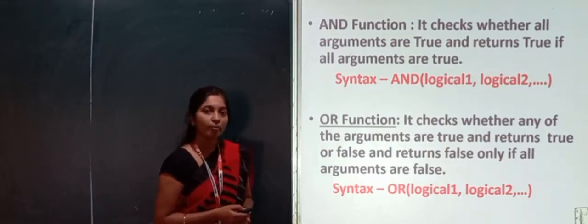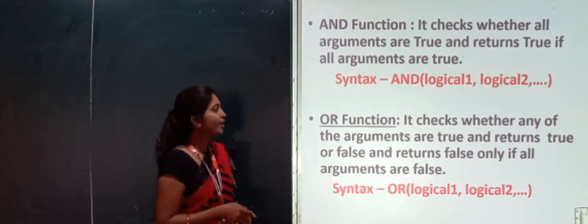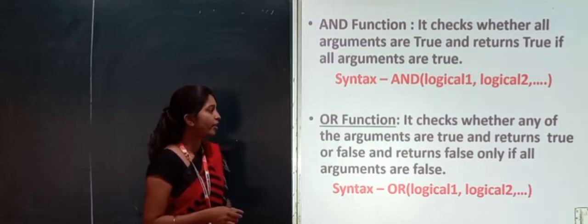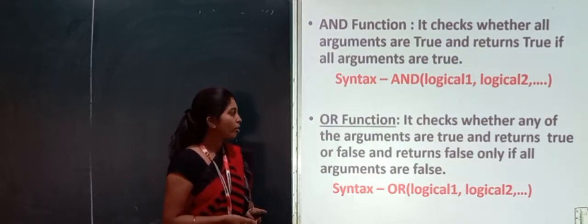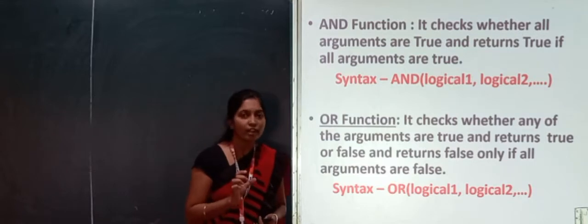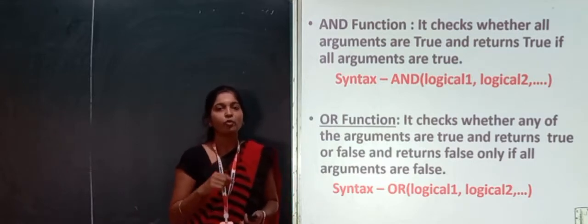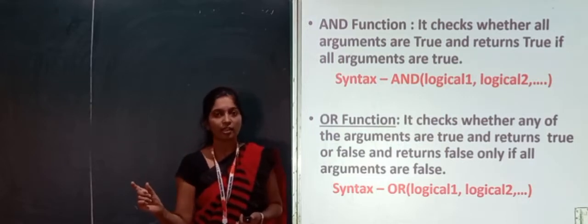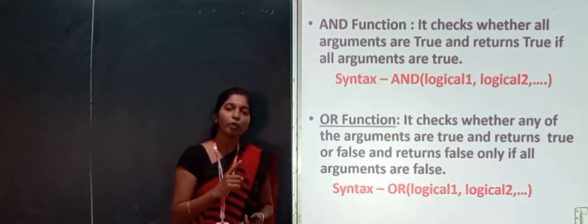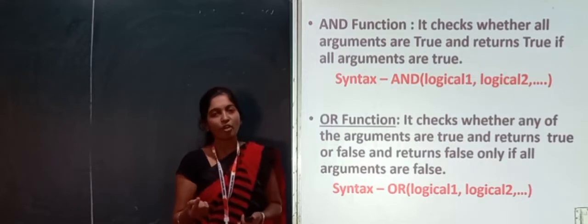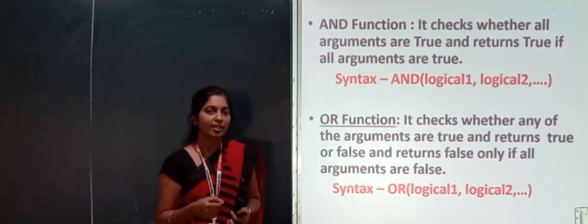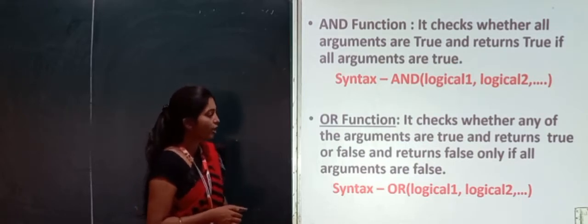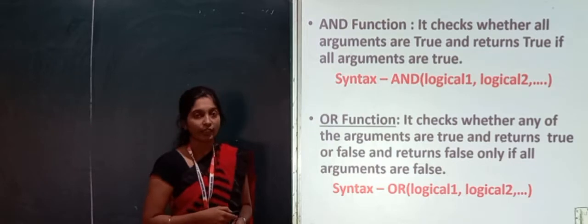The next one is the OR function. It checks whether any of the arguments are true and returns true or false. It returns false only if all arguments are false. The syntax of the OR function is: =OR(logical1, logical2).